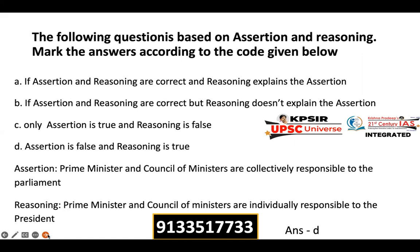The following questions are based on assertion and reasoning. Mark the answers according to the code given below. Assertion: The Prime Minister and Council of Ministers are collectively responsible to the Parliament. Reasoning: The Prime Minister and Council of Ministers are individually responsible to the President.